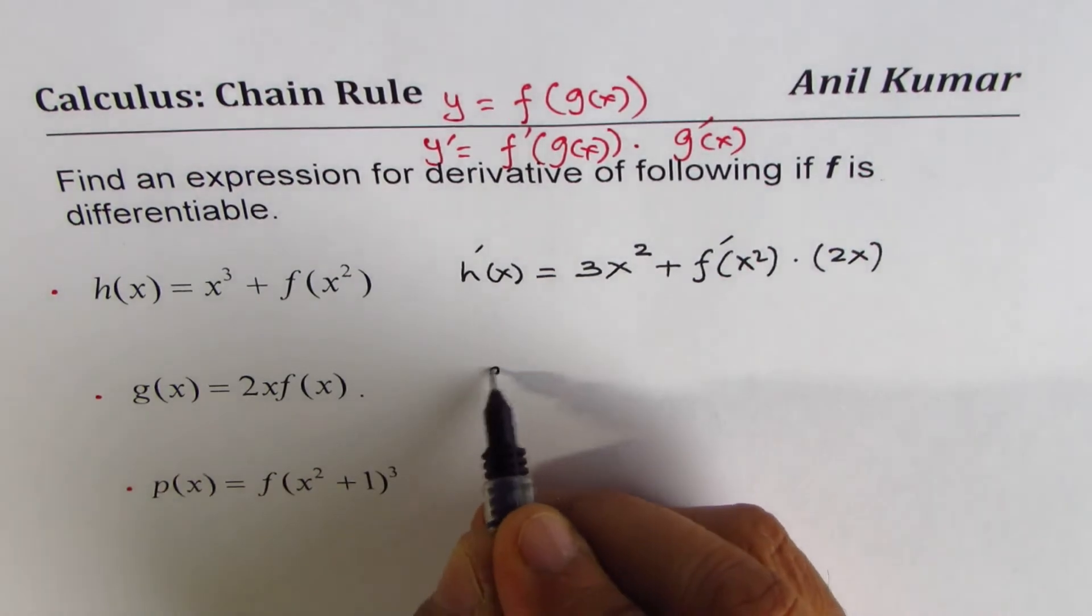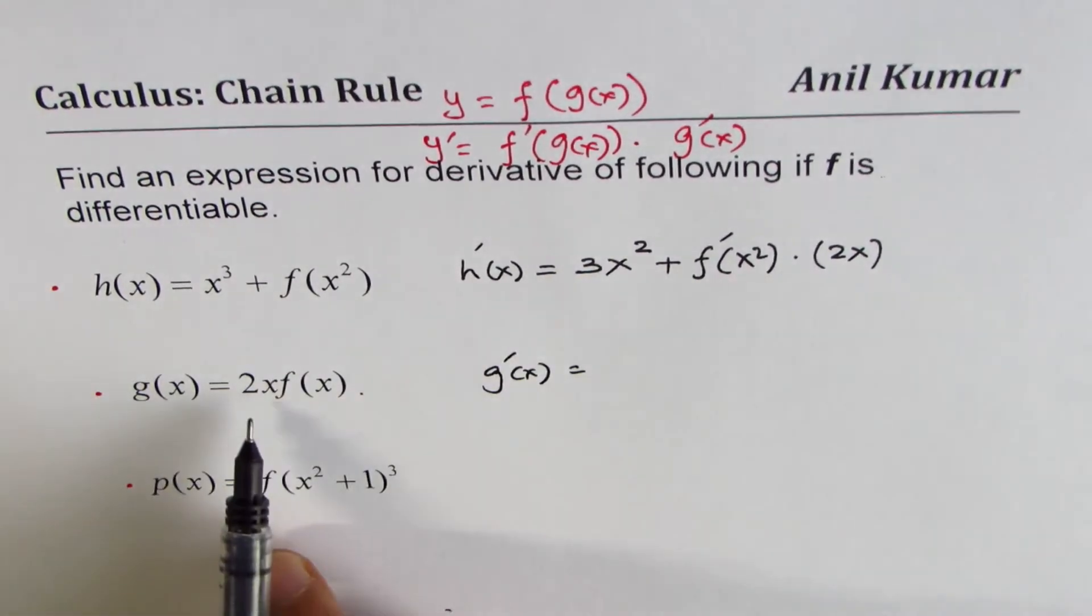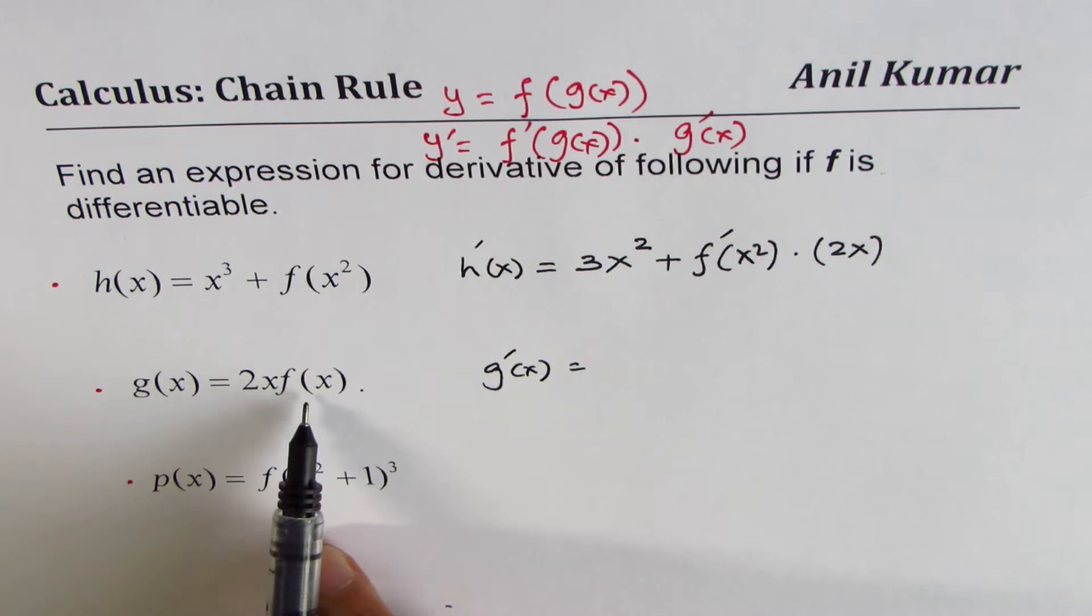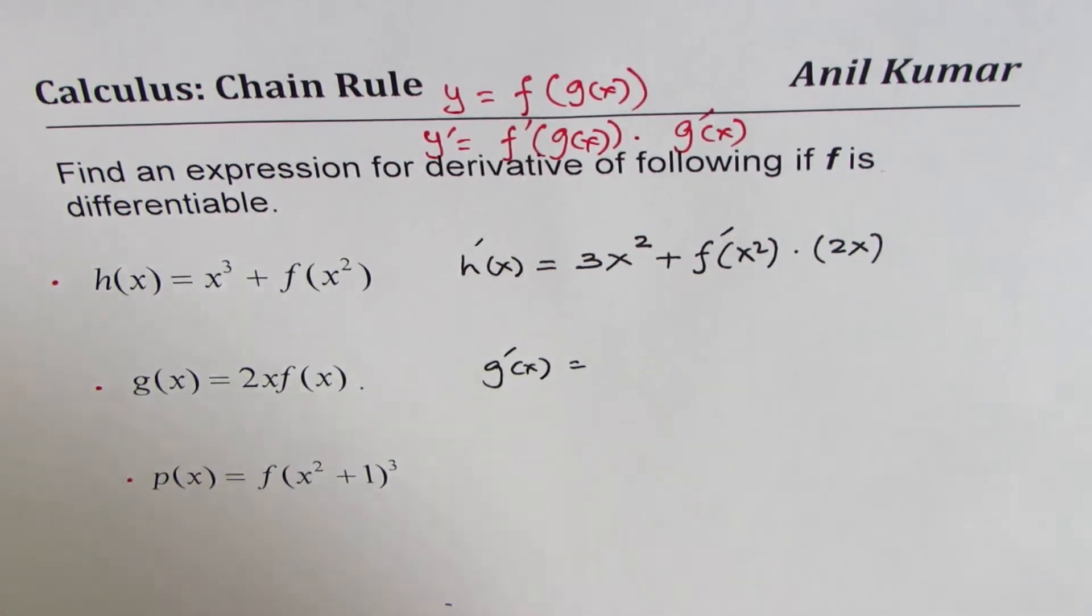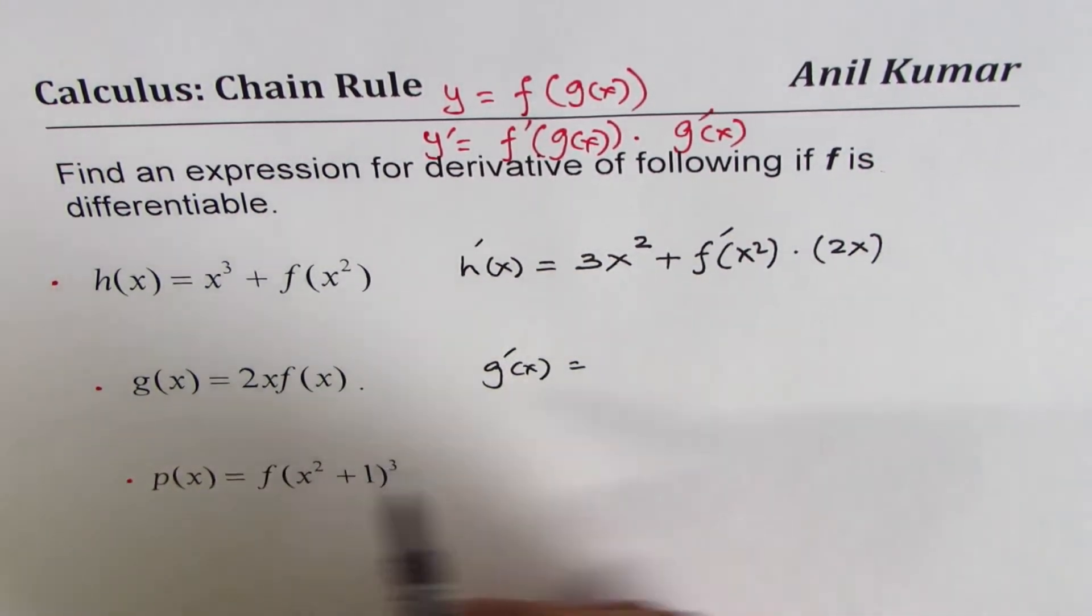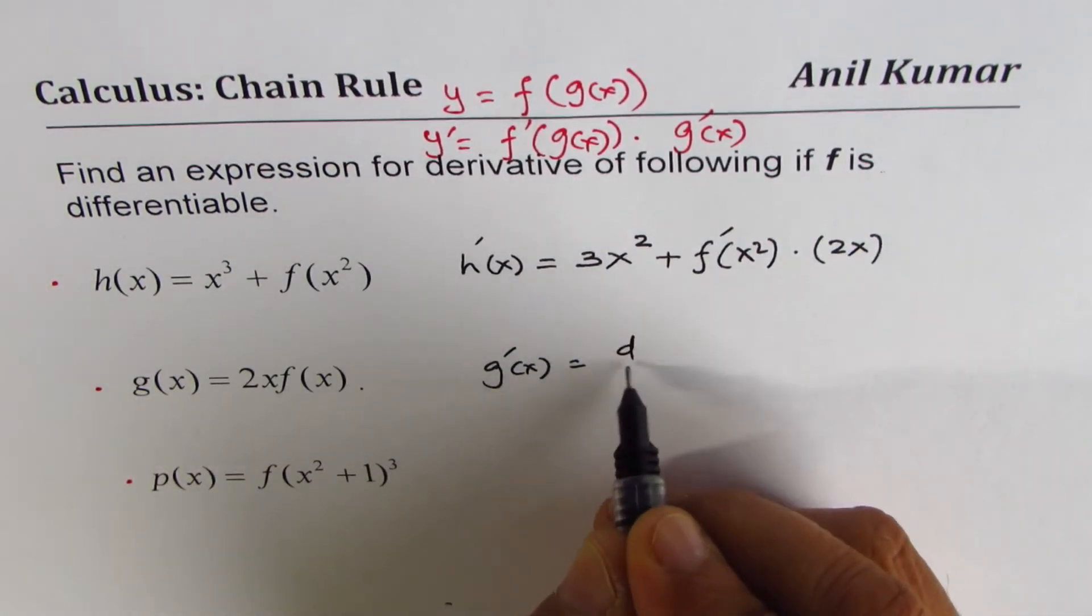The next one: here we have 2x times f of x, so we'll do the product rule. Let's write this in steps.